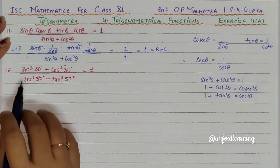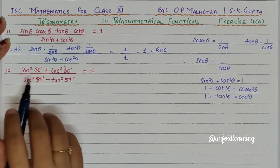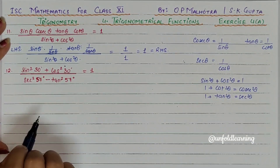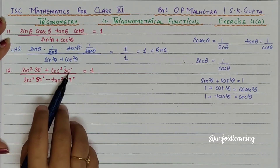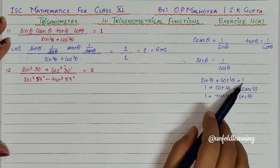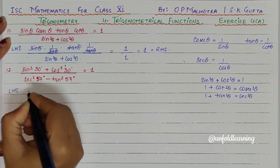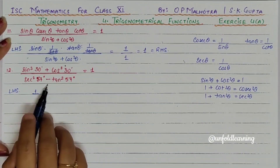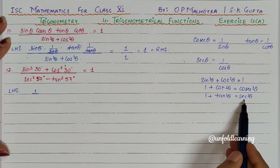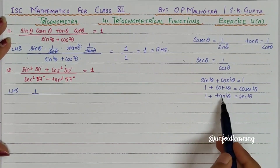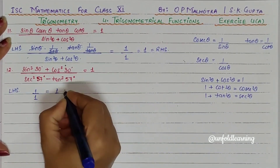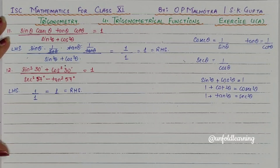Next is question number 12: sin²θ + cos²θ, whole upon sec²57° − tan²57°, is equal to 1. Taking LHS — the numerator sin²θ + cos²θ equals 1. In the denominator, sec²57° − tan²57°: since both angles are the same, sec²θ − tan²θ equals 1. So we get 1 upon 1, which equals 1, and this is equal to your RHS. Hence, this is the solution.